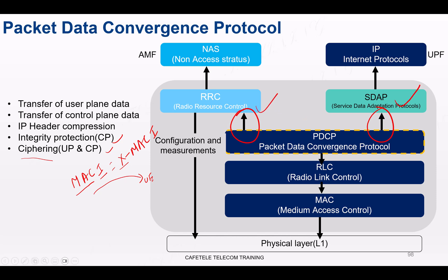Another important function is the maintenance of sequence numbers. PDCP assigns sequence numbers to data packets, which helps the receiver reassemble packets in the correct order and detect any missing packets.